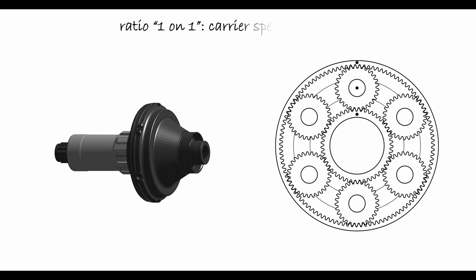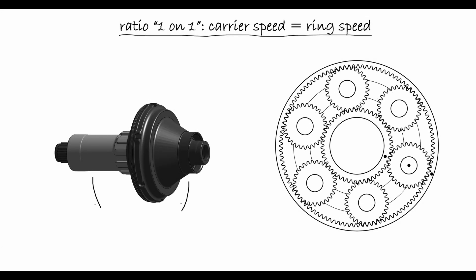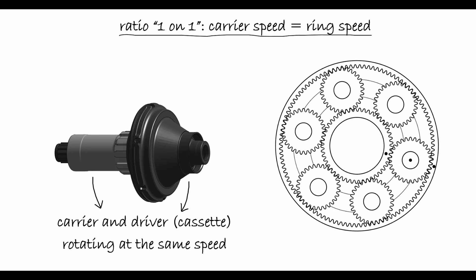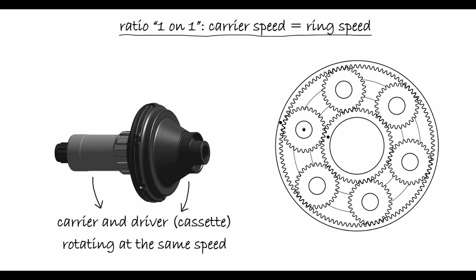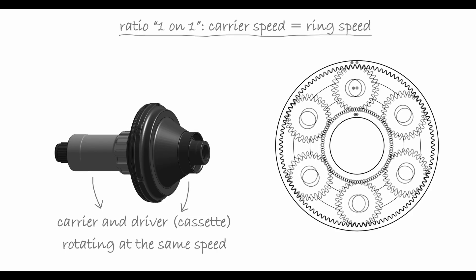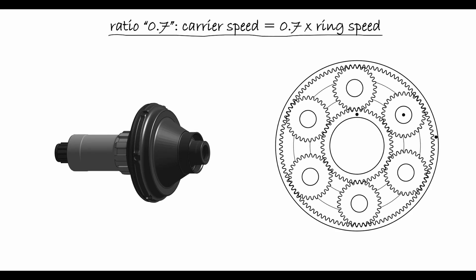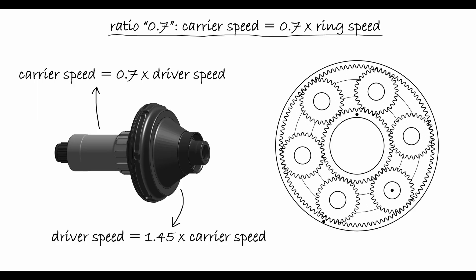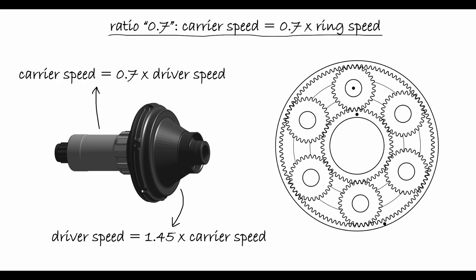Remember that when the PowerShift Hub is in the 1-on-1 ratio, the ring gear and the planet carrier, and hence the cassette and the rear wheel, rotate at exactly the same velocity. When instead the PowerShift Hub is shifted into its 0.7 ratio, the speed of the driver, and hence the cassette, is 1.45 times higher than the speed of the carrier, or rear wheel.